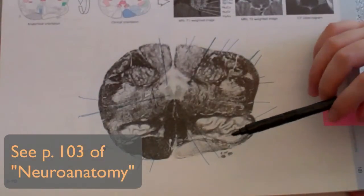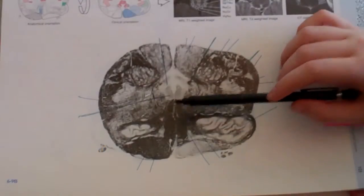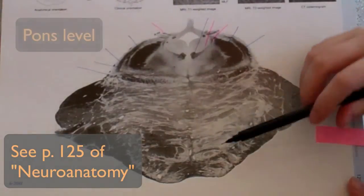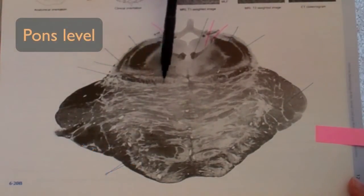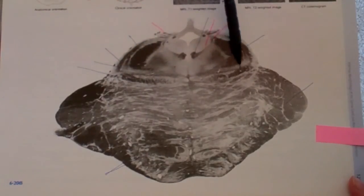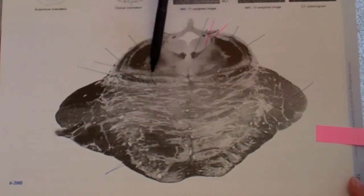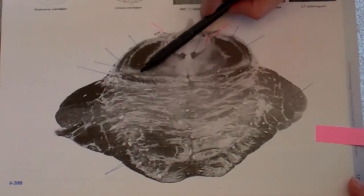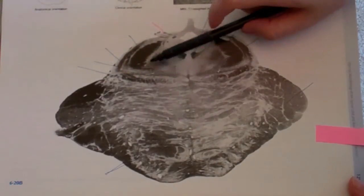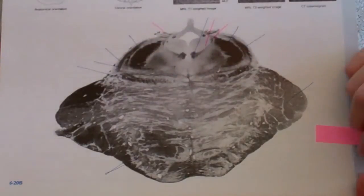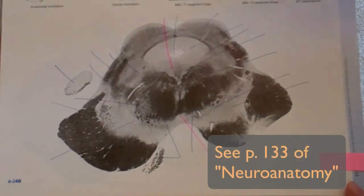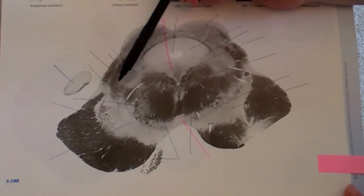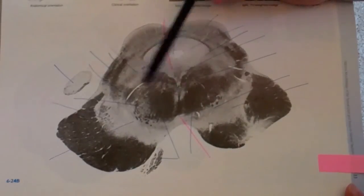Now let's look at what happens inside a real spinal cord. Here you have the medial lemniscus. At the level of the pons, the medial lemniscus has shifted orientation — this is the medial lemniscus on each side. The fibers from the legs are found more in this area, and the fibers from the upper limbs or arms are found more in this central area. Through the midbrain, you can still find the medial lemniscus here, and you can see that it is farther from the middle part.